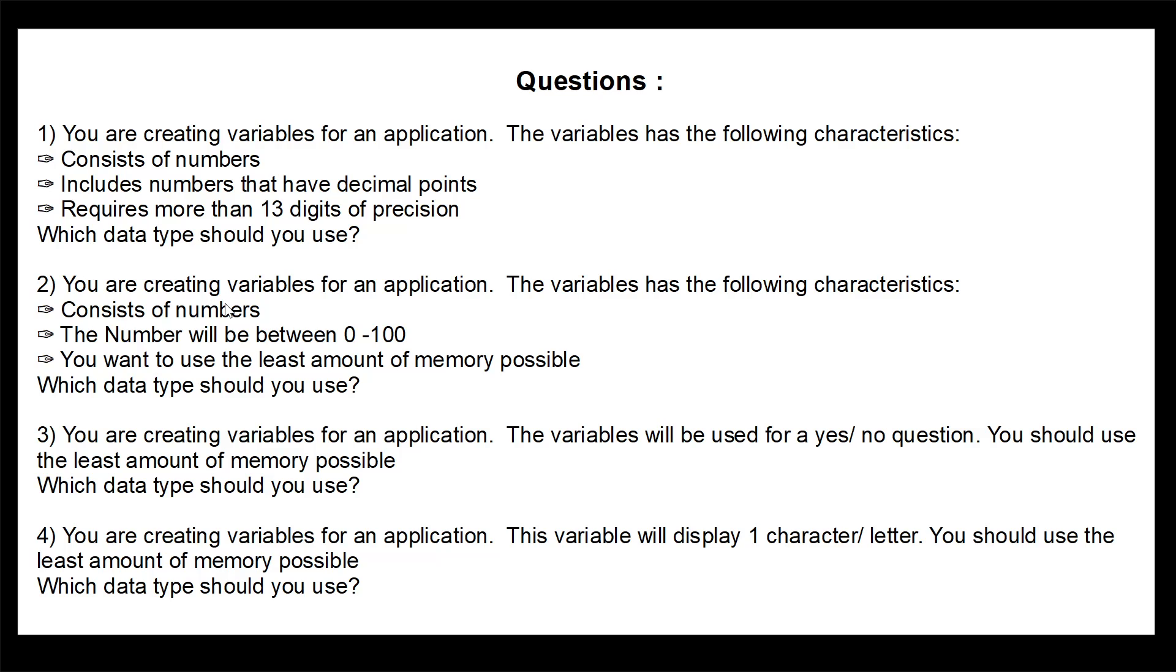Number 2, you are creating a variable and this number will consist of whole numbers 0 to 100 so that could be an int, a long, or a byte or a short but we want to use the least amount of memory possible. To go up to 0 to 100 we can use 1 byte for that and that will allow us to get to that range. So the second one would be a byte.